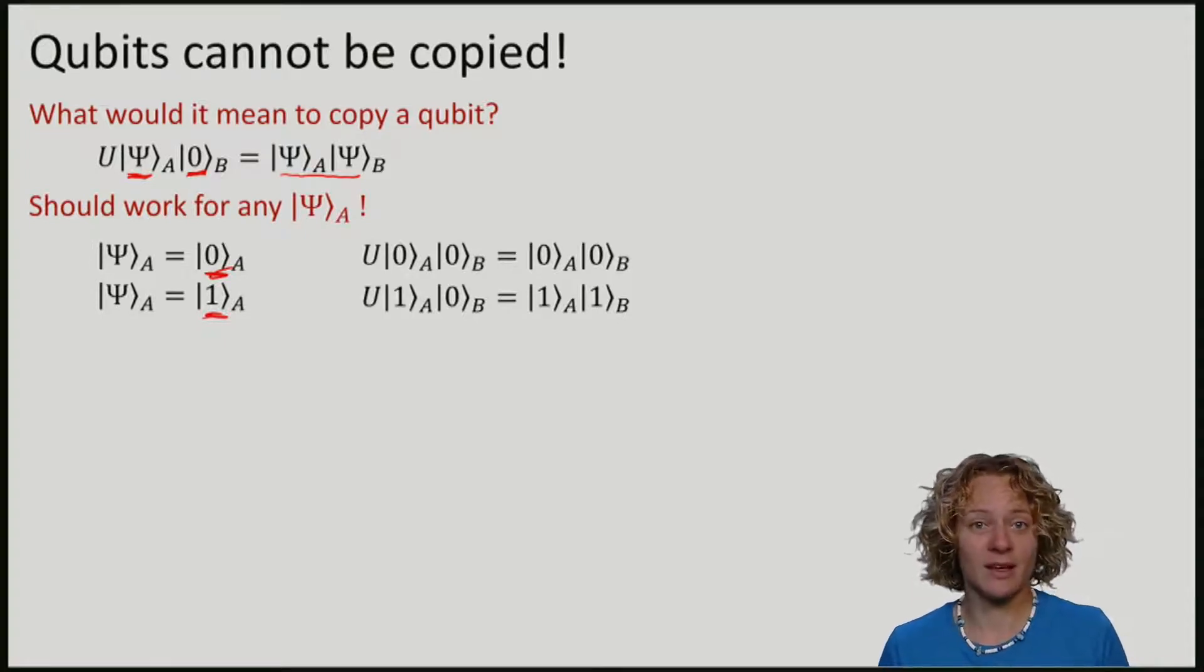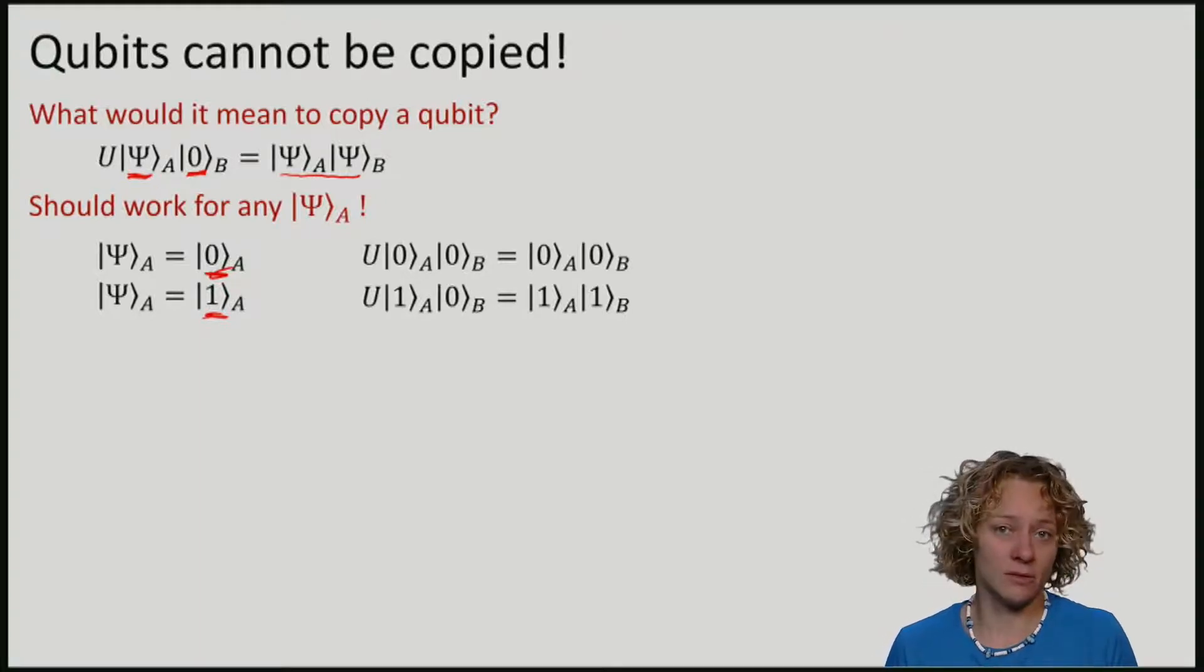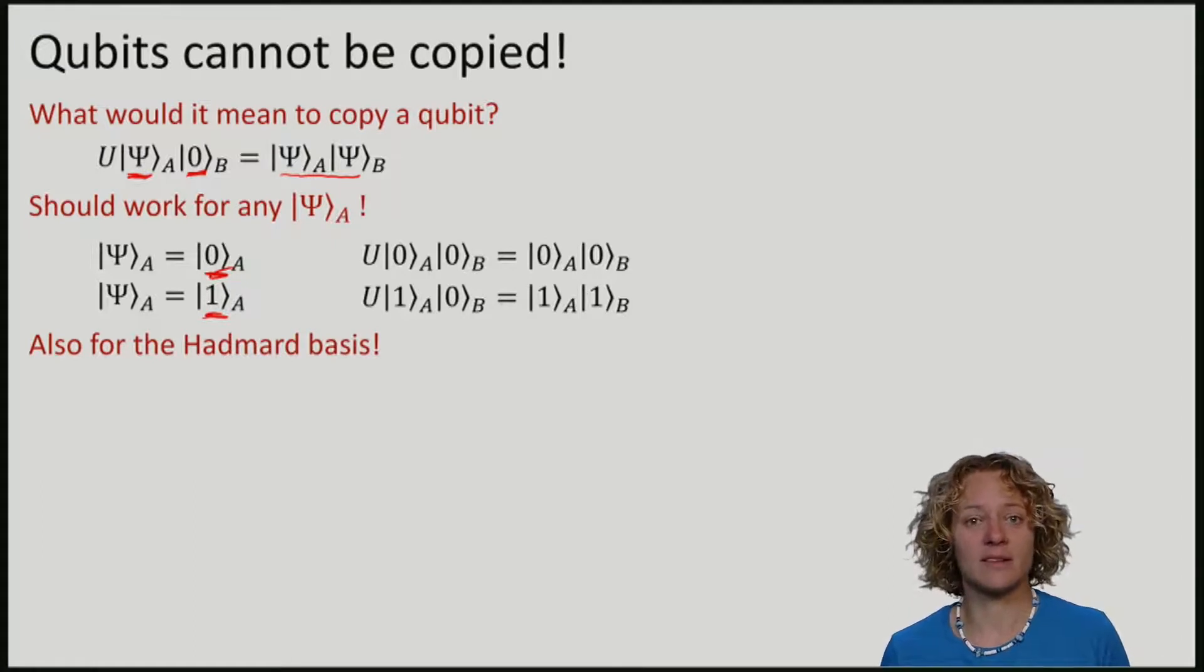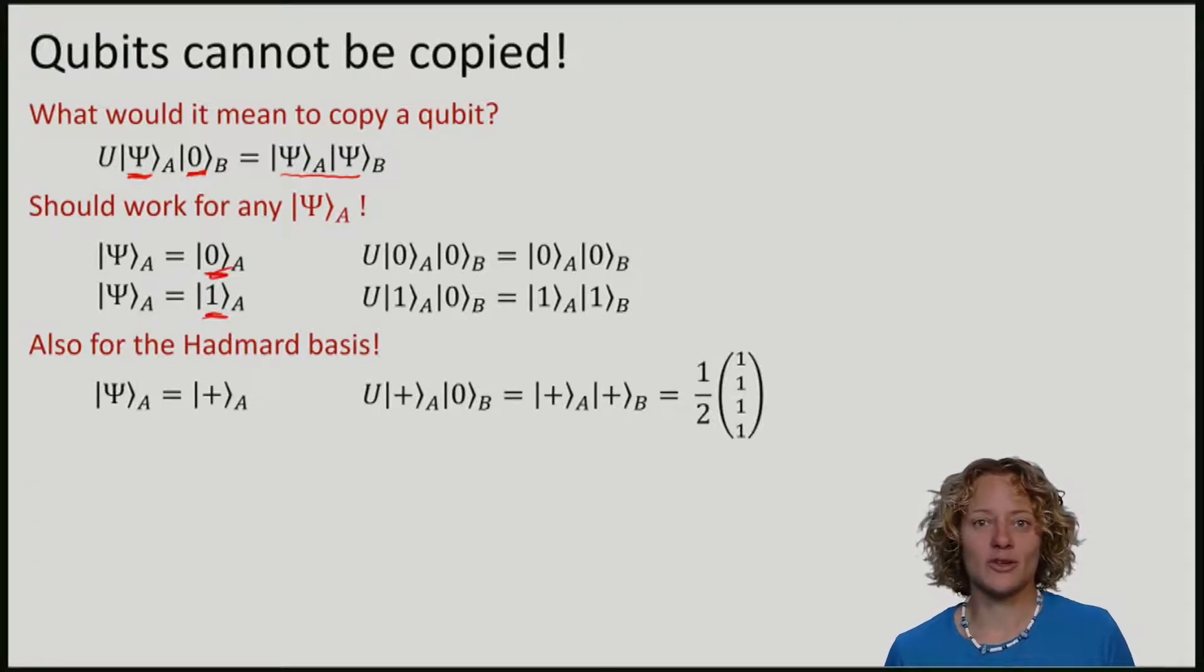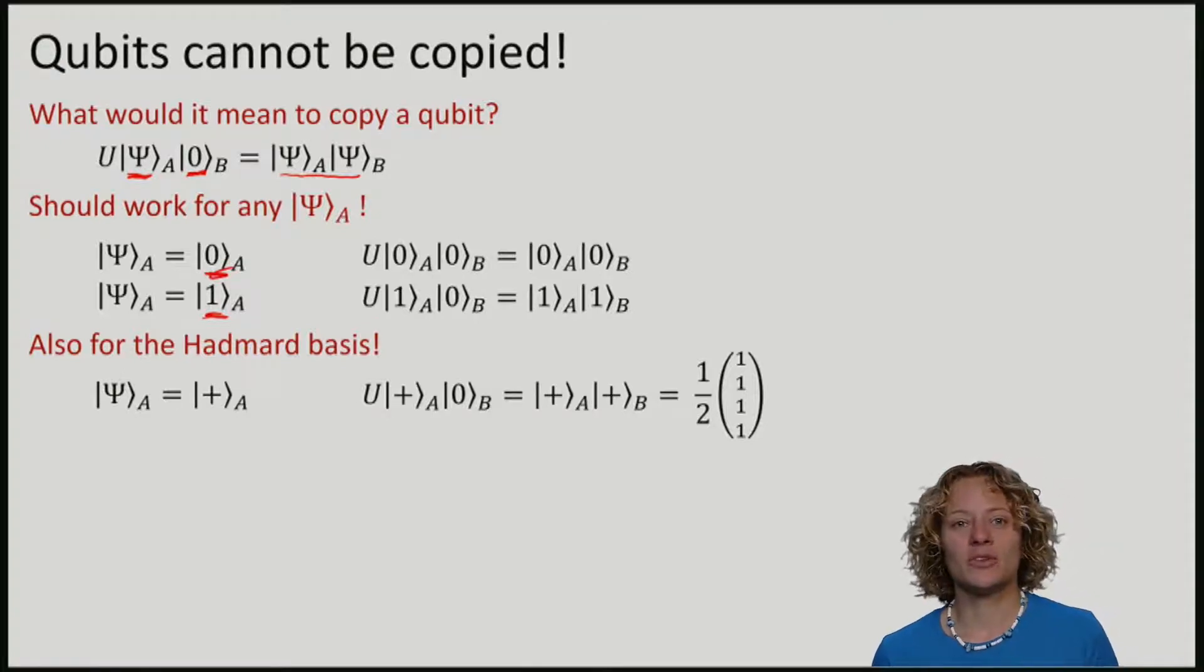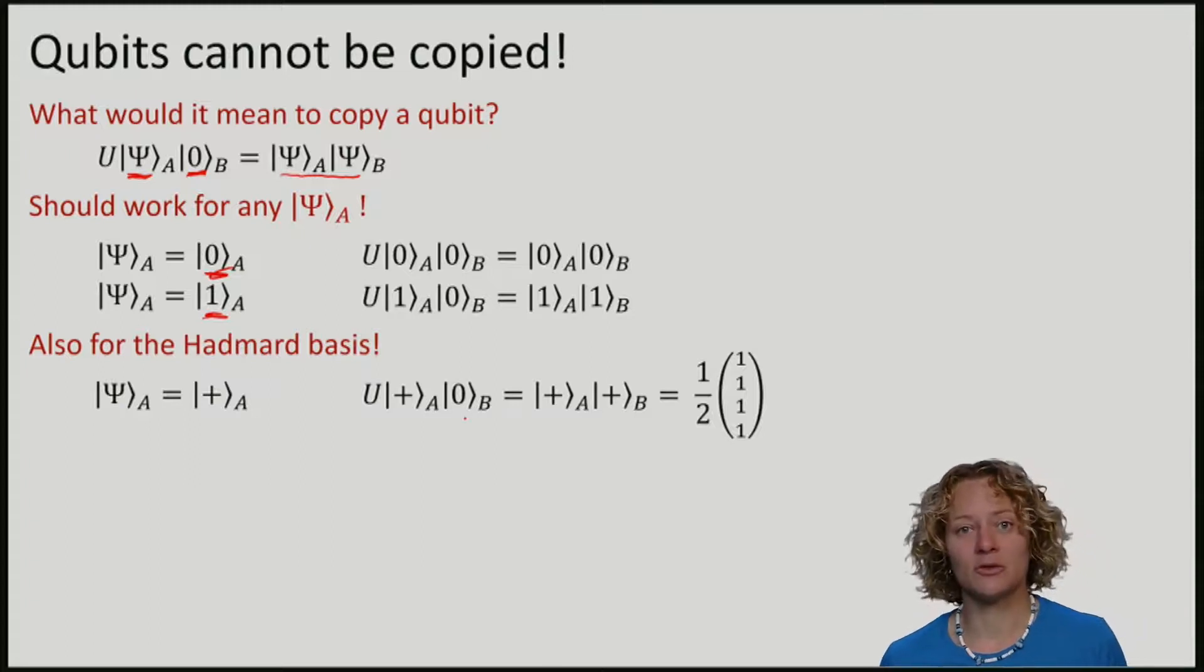Now in the quantum case, our copy operation should work for any qubit, also if |Ψ⟩ is the |+⟩ state, the Hadamard basis. This means that such a copy procedure, if it existed, would turn the state |+⟩|0⟩ into |+⟩|+⟩.